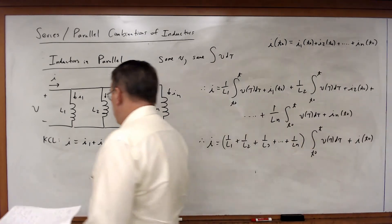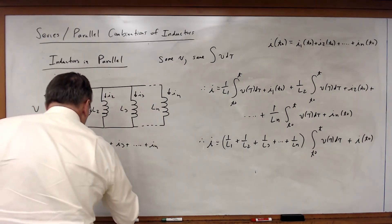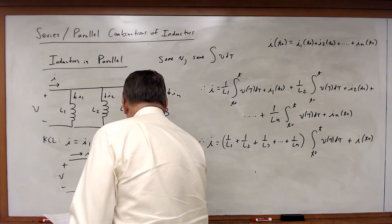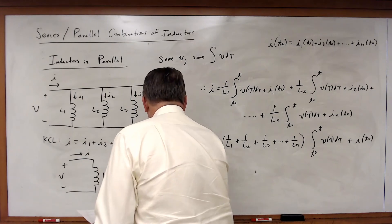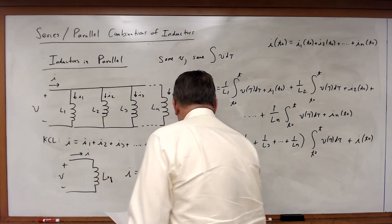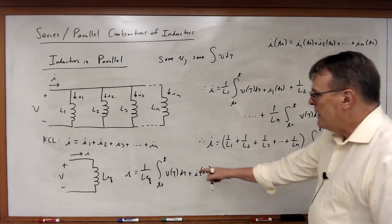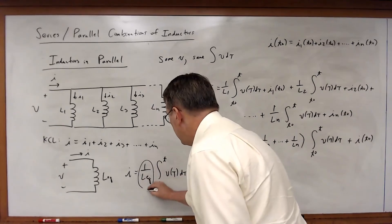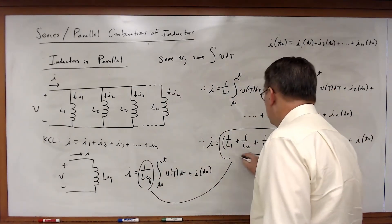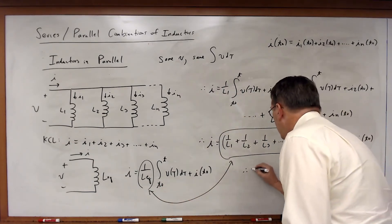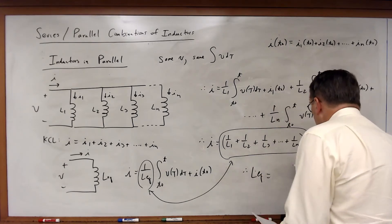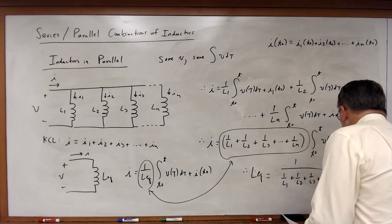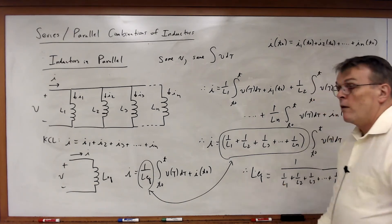Combining common terms, I equals (1/L1 plus 1/L2 plus 1/L3, all the way to 1/L sub N) times the integral from T0 to T of V(τ)dτ, plus I(T0). To turn this into a single equivalent inductor with the same voltage and current, we need I equals (1/L-eq) times the integral plus I(T0). Therefore, L-eq must equal 1 divided by (1/L1 plus 1/L2 plus 1/L3, all the way to 1/L sub N) for inductors in parallel.